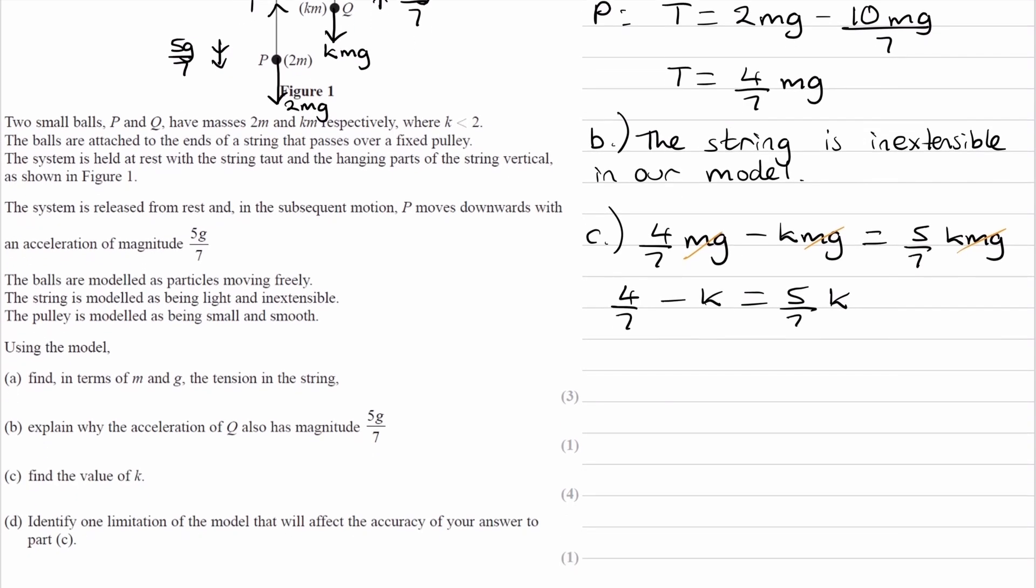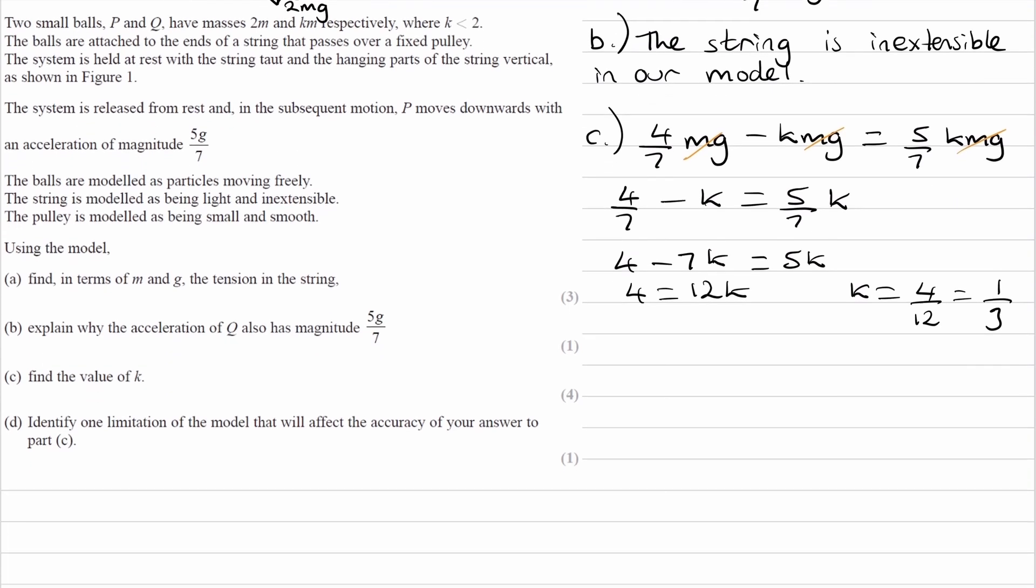To make things simple here, I'm going to times everything by 7. So 4 minus 7k is equal to 5k. Bring the 7k over, we end up with 4 is equal to 12k. And finally, k is 4 over 12, or 1 over 3. And that is part c done.